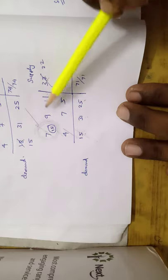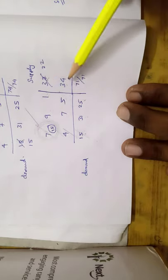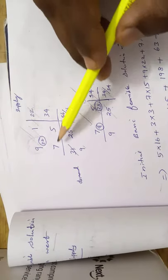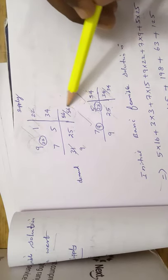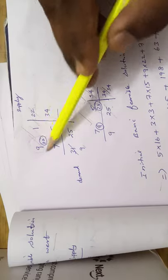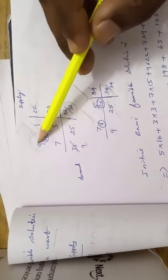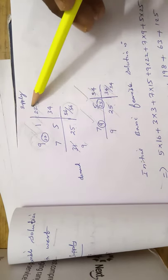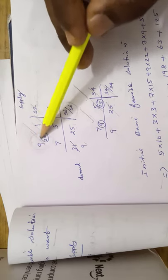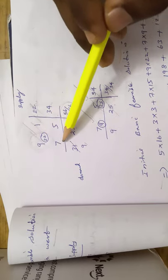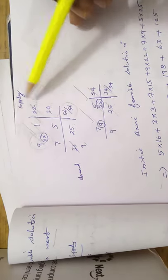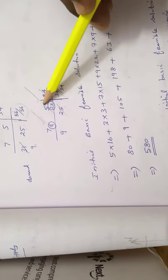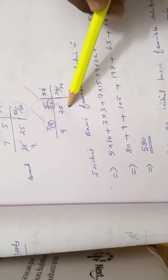Remaining elements are cost 9, 1, 7, 5. Supply is 22, 34 and demand values are 31 and 25. Total supply is 56 and demand is 56 — balanced. The new North West corner is 9. Corresponding supply is 22 and demand is 31. Minimum is 22, so allocate 22 to cost 9. Cross out the row. Demand becomes 31 minus 22 equals 9.